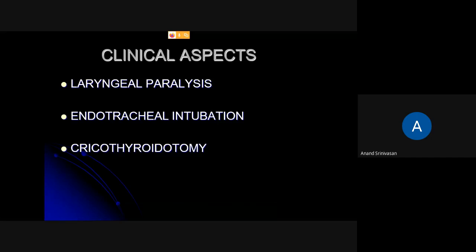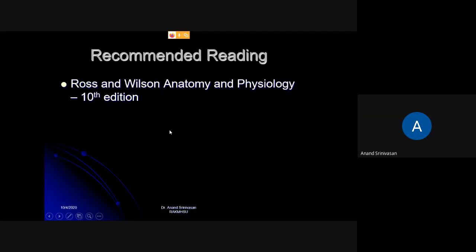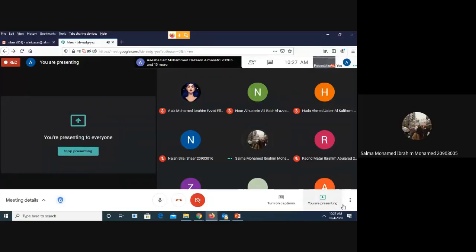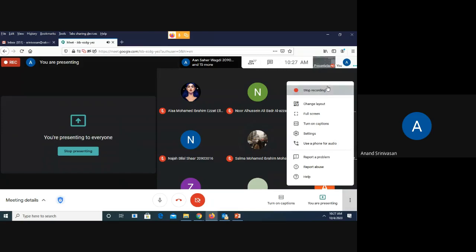In tomorrow's class we will see three more things: laryngeal paralysis, endotracheal intubation — which is done during anesthesia — and cricothyroidotomy, which is an opening made in the trachea in case of any obstruction.